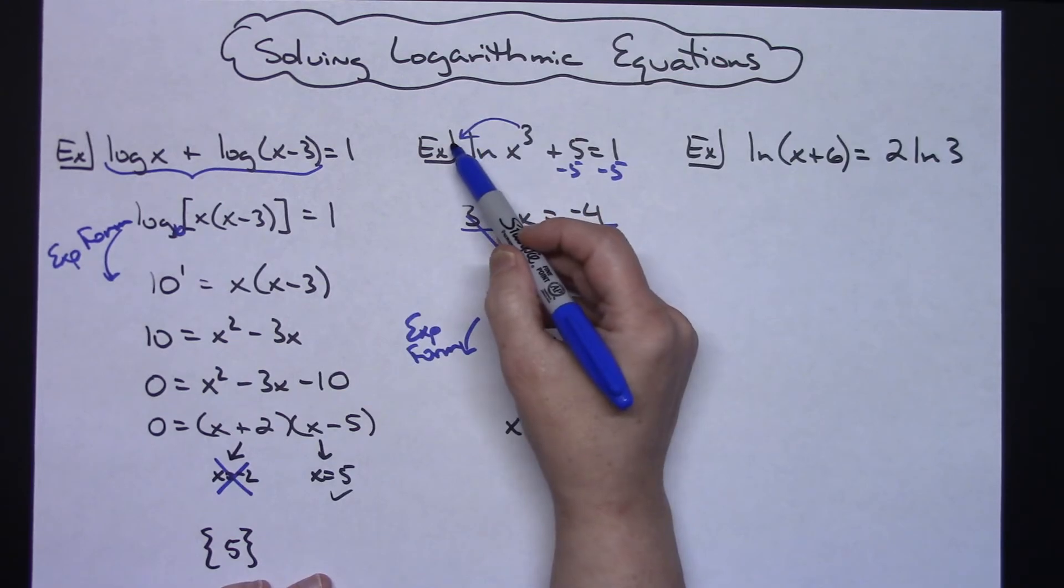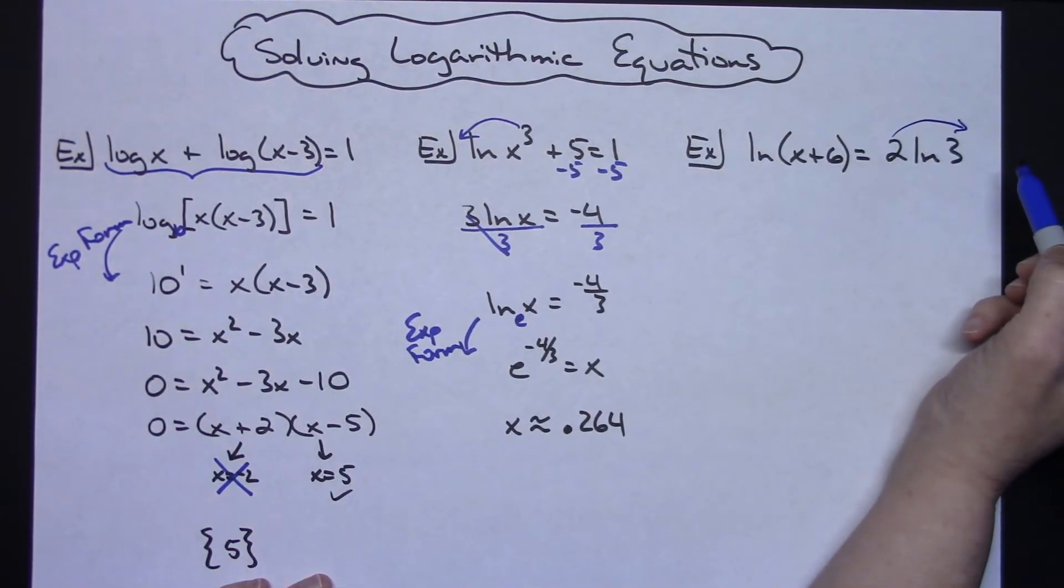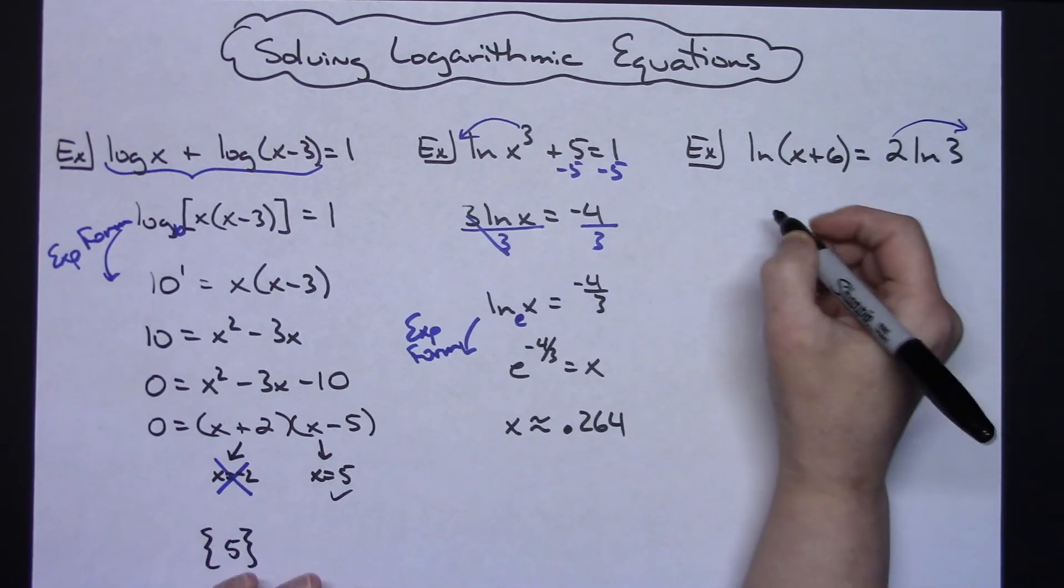So I'm going to move that 2 up there and square it. I would then have a 3 squared right there which would be 9, so then I'm going to have natural log X plus 6 equals natural log of 9.